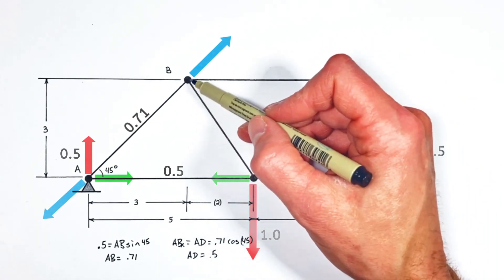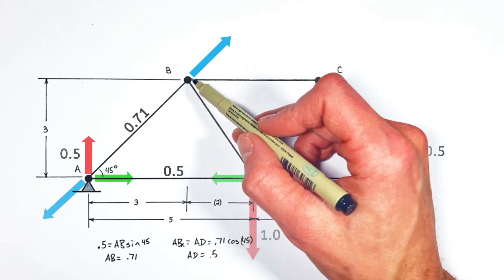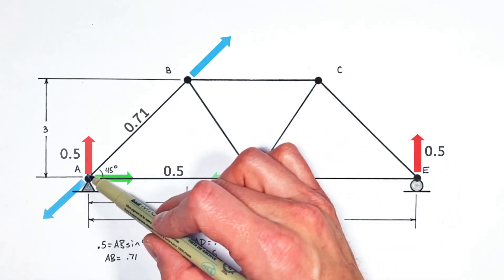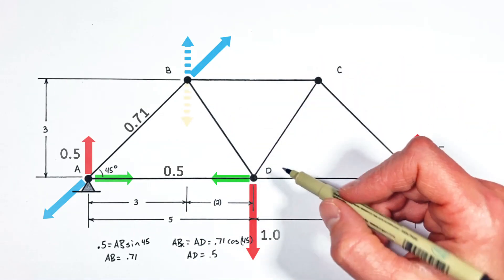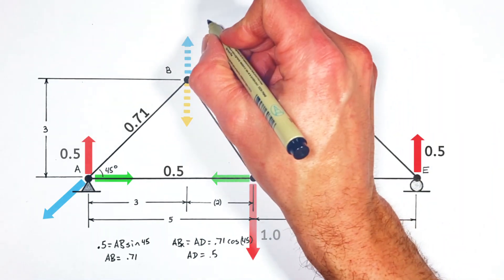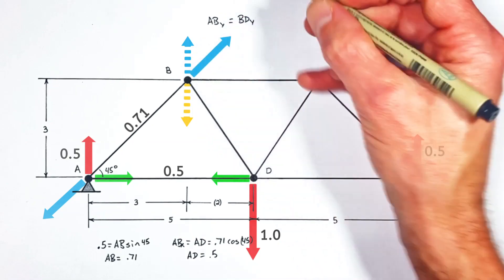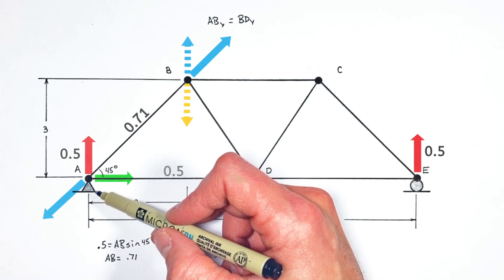So going back to our rules of trusses, if this joint right here isn't going to move vertically, that means the sum of all forces on joint B has to equal 0. Or to put it a different way, however hard AB is pushing up, BD has to be pulling down. So mathematically we can say ABY equals BDY. Now we know the vertical component of AB already, we solved for that over here, it's 0.5.